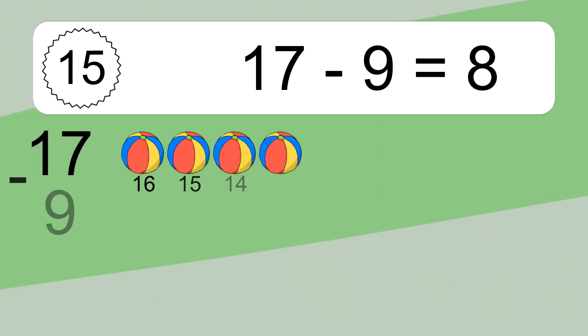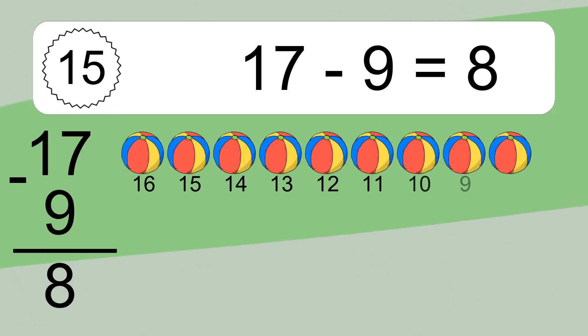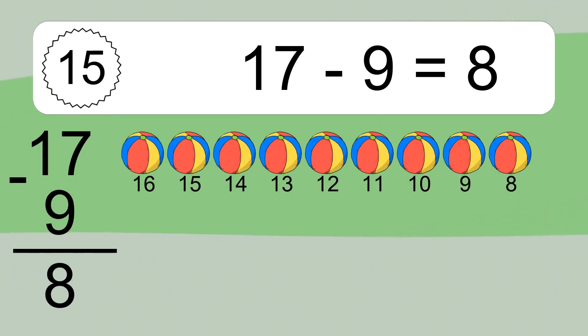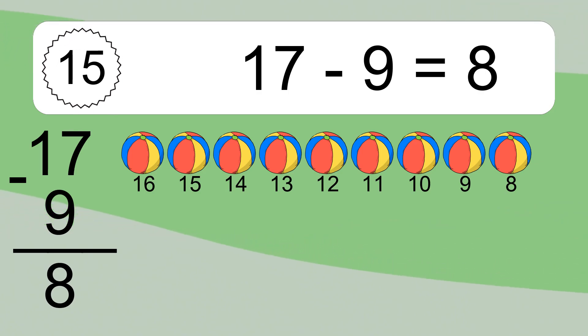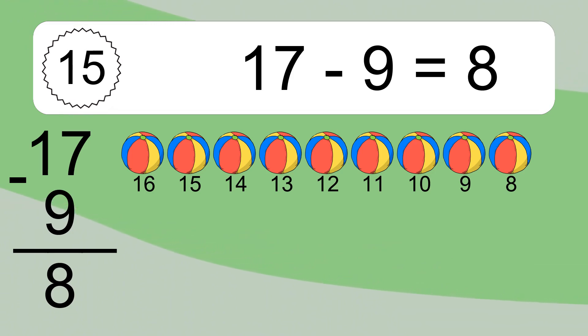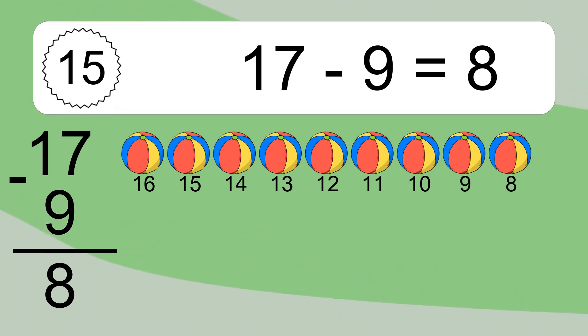17 minus 9 equals 8. Let's count it: 16, 15, 14, 13, 12, 11, 10, 9, 8.